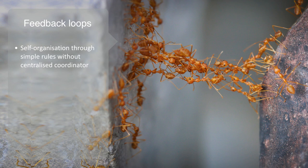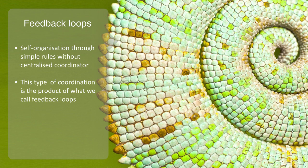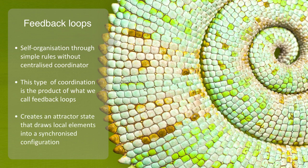This type of coordination is the product of what we call feedback loops. We will be discussing how through feedback loops some local pattern or behavior can become amplified to create an attractor state that will draw local elements into a particular synchronized configuration, thus arising some pattern of organization without the need for any form of top-down control system.